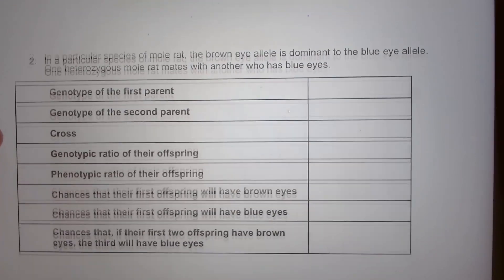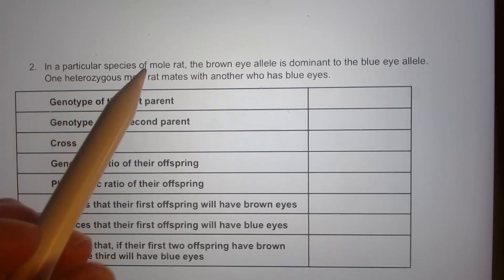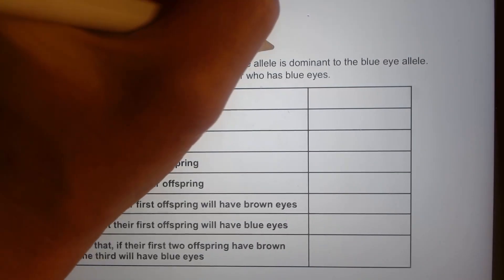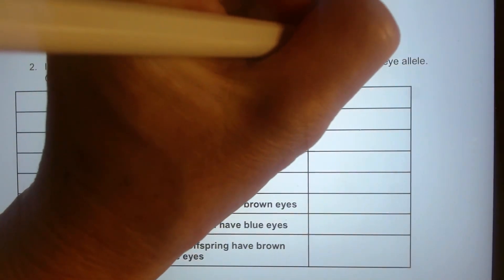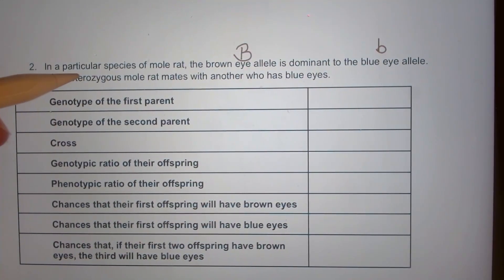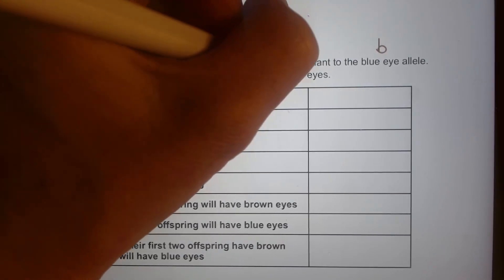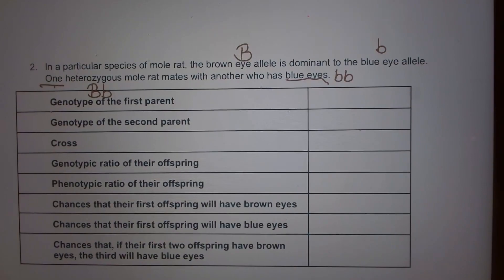Number two: for a particular species of mole rat, a brown allele is dominant to the blue allele. So brown is capital B and blue is lowercase b. One parent is heterozygous — capital B lowercase b — and the other has blue eyes, which can only happen when two lowercase b's are present.